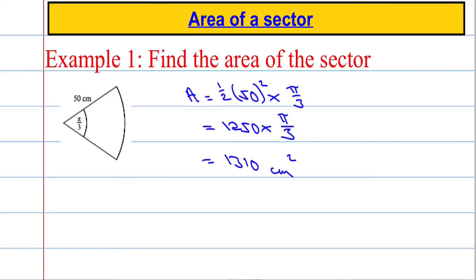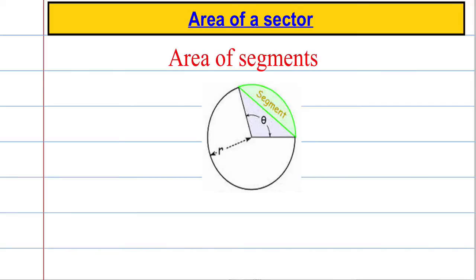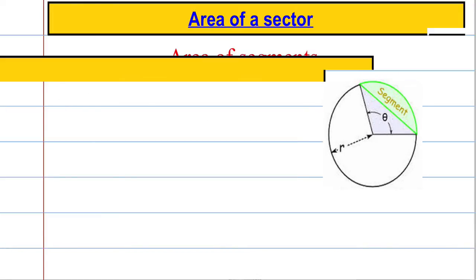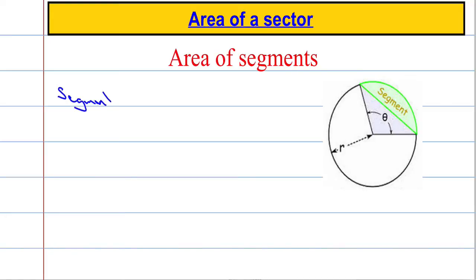That's how we calculate the area of a sector. That's a fairly straightforward question — you may have to work backwards and calculate a radius. We're going to move on now and take a look at a segment and see how we might find the area of a segment. This region here is what we call a segment, and if I think about it geometrically, the segment is in fact equal to the sector take away the triangle here. If I take that triangle away from the sector, we're going to be left with this segment.